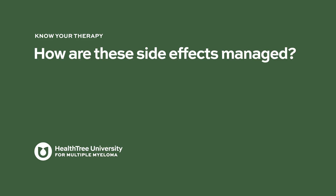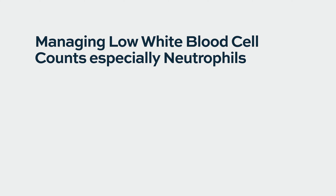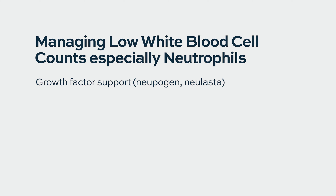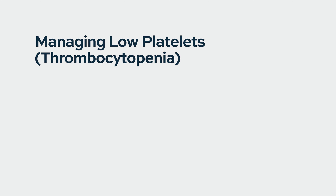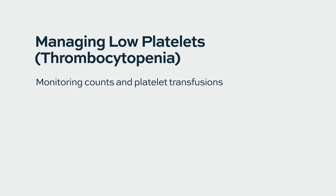How are these side effects managed? For the hematologic side effects — specifically low white blood cell count and low neutrophils — the majority of patients will require growth factor support, whether in the form of Neupogen, Neulasta, or an equivalent agent. These therapies shorten the duration of low neutrophil counts and reduce the risk of infection. For low platelets, the primary management is monitoring counts and transfusing platelets when necessary. Thrombopoietic agents such as Nplate or romiplostim are sometimes used to support platelet counts, though this is not an on-label indication.